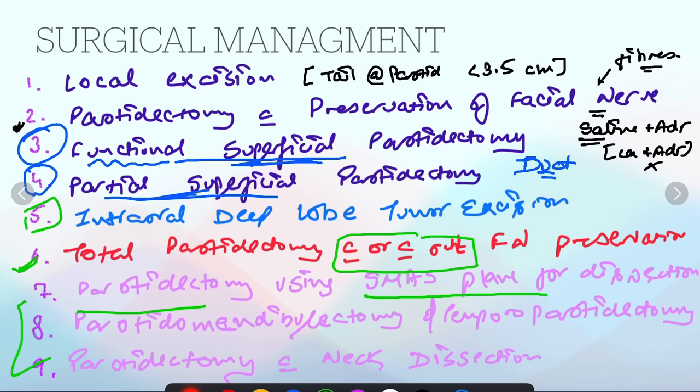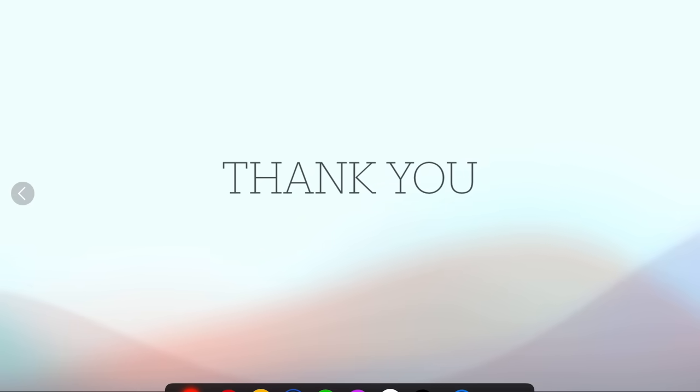Seven, eight, nine are parotidectomy with something additional. That is mass plane for dissection is used. Eighth is parotid along with mandibulectomy or temporal along with parotidectomy. Ninth is parotidectomy with neck dissection. Thank you for patient listening.